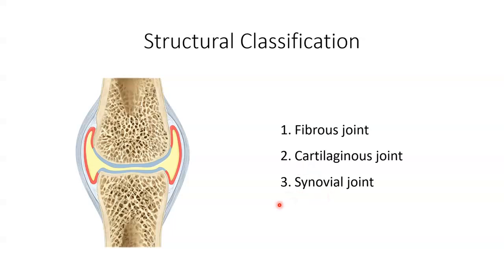And a synovial joint, which does contain a synovial cavity, and the bones of the joint are connected by dense irregular connective tissue of an articular capsule, also known as a joint capsule, and is this fibrous structure we see on either side here.